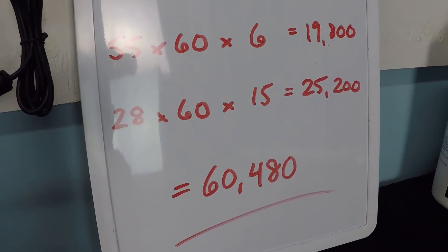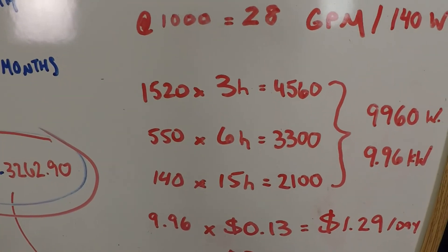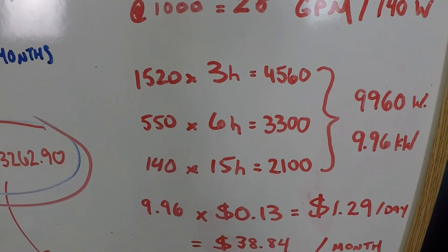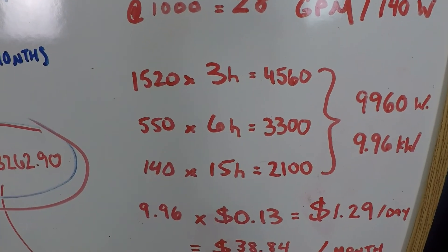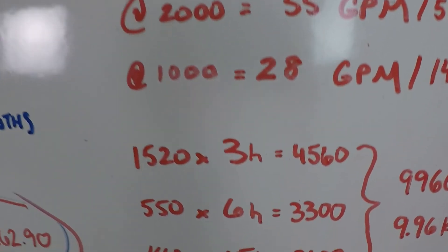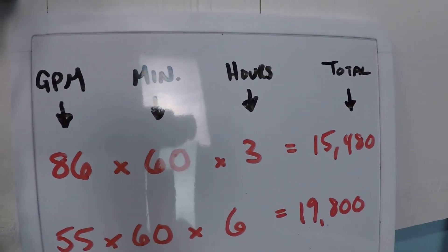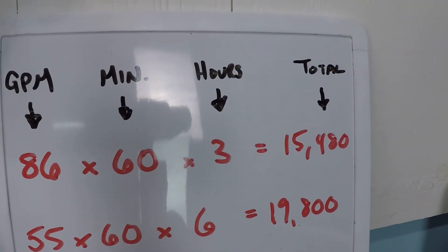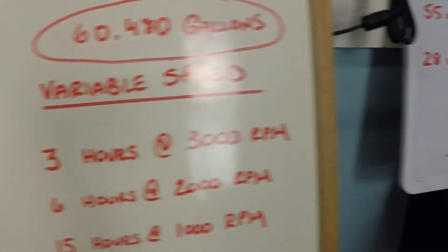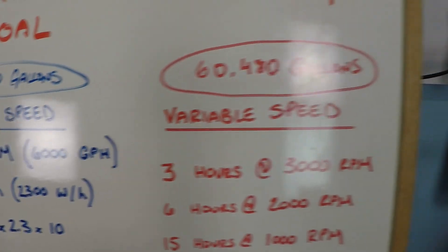What is specifically interesting about that, if you look at the power consumption during these periods of time, the 15 hours of operation at low speed used less than half of the power of the three hours at higher speed. That's really interesting because you paid more in power to get 15,000 gallons than you did to get the 25,000 gallons. And that's why, cumulatively, the single speed just can't compete. It cannot compete.